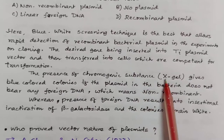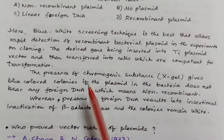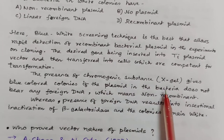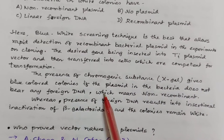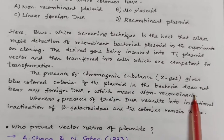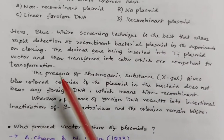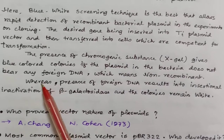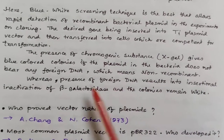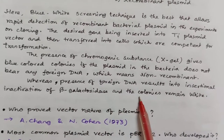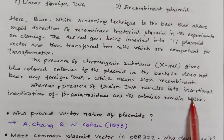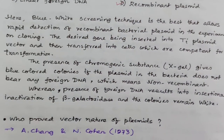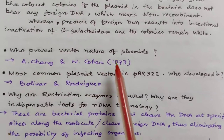In blue-white screening, the desired gene is inserted into the Ti plasmid (tumor-inducing plasmid) vector and transferred into competent cells. The chromogenic substance X-gal gives blue-colored colonies when the plasmid does not bear any foreign DNA — those are non-recombinant types. Whereas the presence of foreign DNA results in insertional inactivation of beta-galactosidase, and colonies remain white.